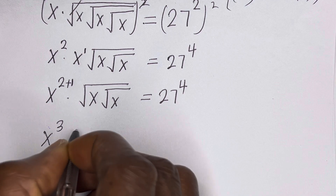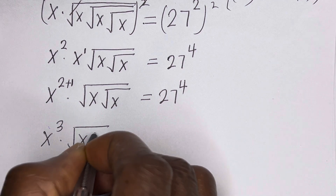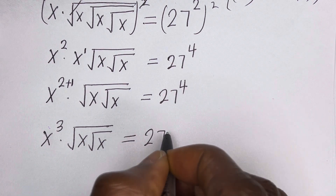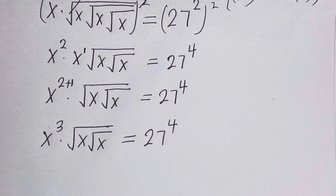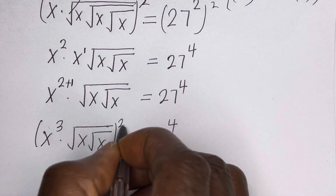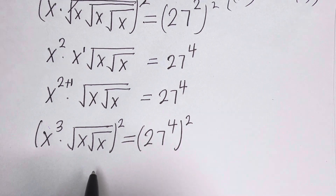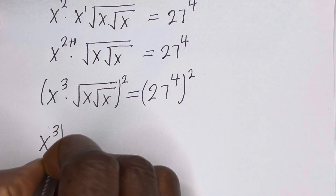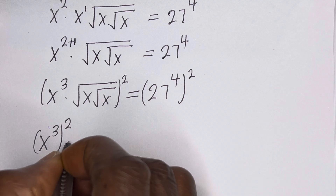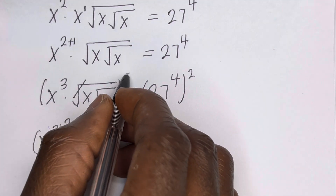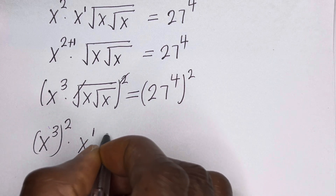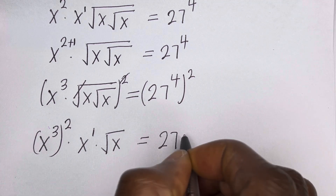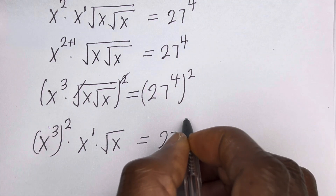Now let us square both sides of this equation again. Here we have S raised to power 3, to the power of 2, multiplied by this — cancel this. We have S raised to power 1, multiplied by square root of S, is equal to 27 to the power of 4 times 2, that is 8.